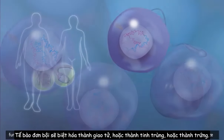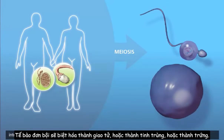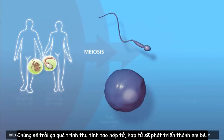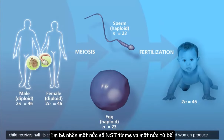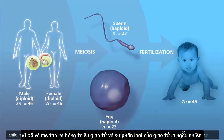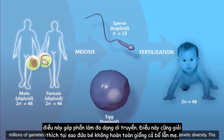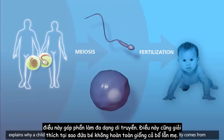The haploid daughter cells will specialize into gametes, either sperm or egg. These fuse in fertilization to form a zygote, which will grow into a child. The child receives half its chromosomes from its mother and half from its father. Because men and women produce millions of gametes and the selection of gametes in fertilization is random, this contributes to genetic diversity, explaining why a child isn't identical to either parent.